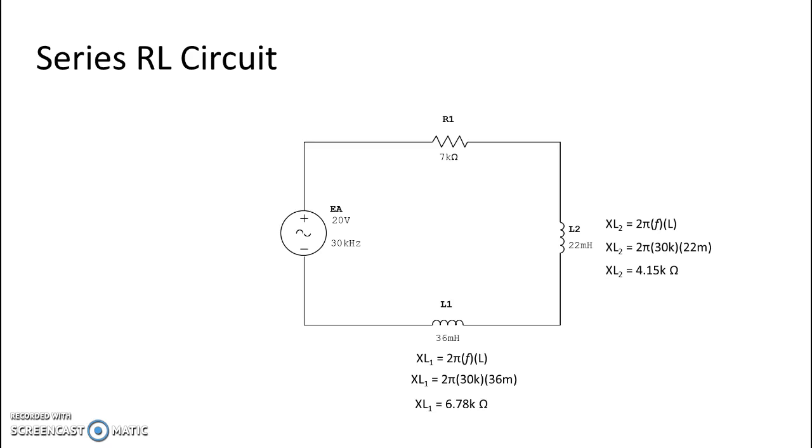Alright, so likes can be added together in series. We only have one resistor so it's obvious that total resistance will be 7k, but we will add our two inductive reactances together to get total inductive reactance. So we add those two values and we get a total inductive reactance of 10.93k ohms.